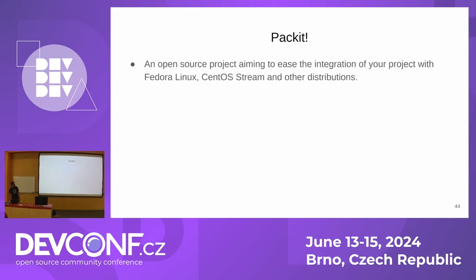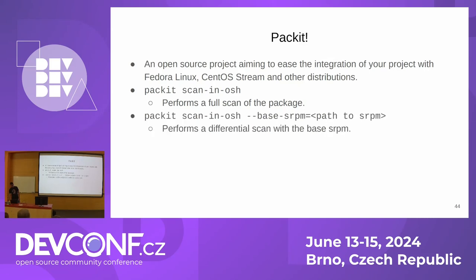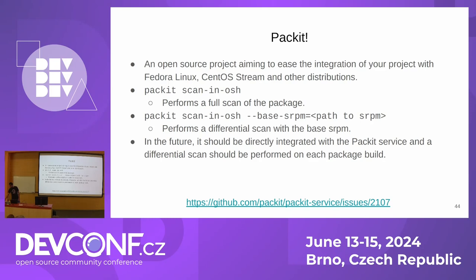Let me talk about Packit. Packit is a service aimed at making it easy to build RPM packages for the distributions listed. The Packit command-line tool already supports submitting a scan — if you use Packit, you can use the sub-command 'packit scan-in-osh' to perform a full scan on the package. For a differential scan, you can use the SRPM option. Ideally we should be running these scans automatically; we're currently in discussion with the Packit team about how to do differential scans automatically.